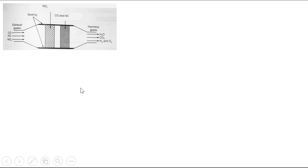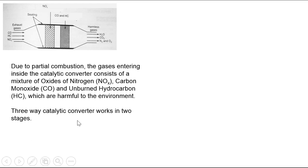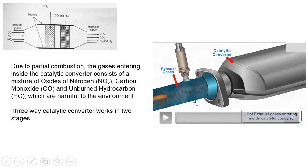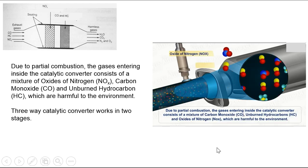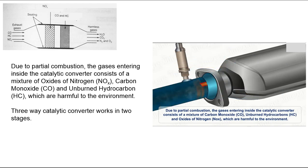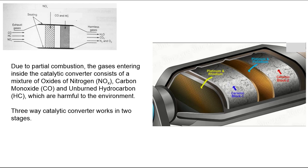This is the diagram which you can draw during examination. Due to partial combustion, the gases entering the catalytic converter consist of a mixture of oxides of nitrogen (NO or NO2), carbon monoxide and unburnt hydrocarbons, which are harmful to the environment. The 3-way catalytic converter works in two stages — stage 1 has platinum and rhodium, and stage 2 has platinum and palladium.